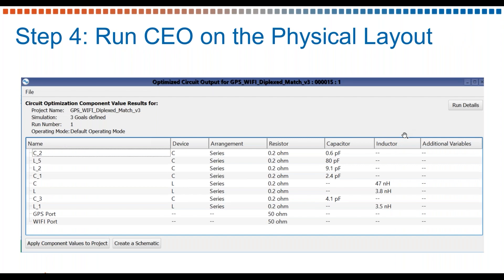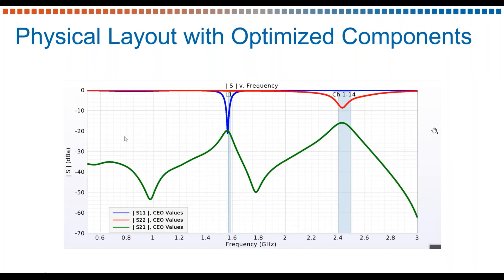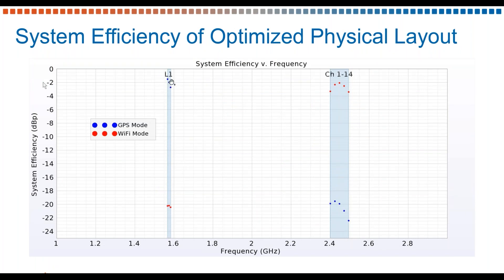Perhaps one of the most important aspects of the circuit element optimizer is the ability to define goals. In this simple GPS Wi-Fi diplexer match example, we set goals of system efficiency for GPS and Wi-Fi at negative 3 dB, and isolation between the GPS and Wi-Fi ports for the GPS frequency at negative 20 dB or less. The circuit element optimizer takes the results from our multi-port response matrix and assigns new component values to meet those goals. Here we've got the results showing good isolation between the GPS and Wi-Fi bands at the GPS frequency.